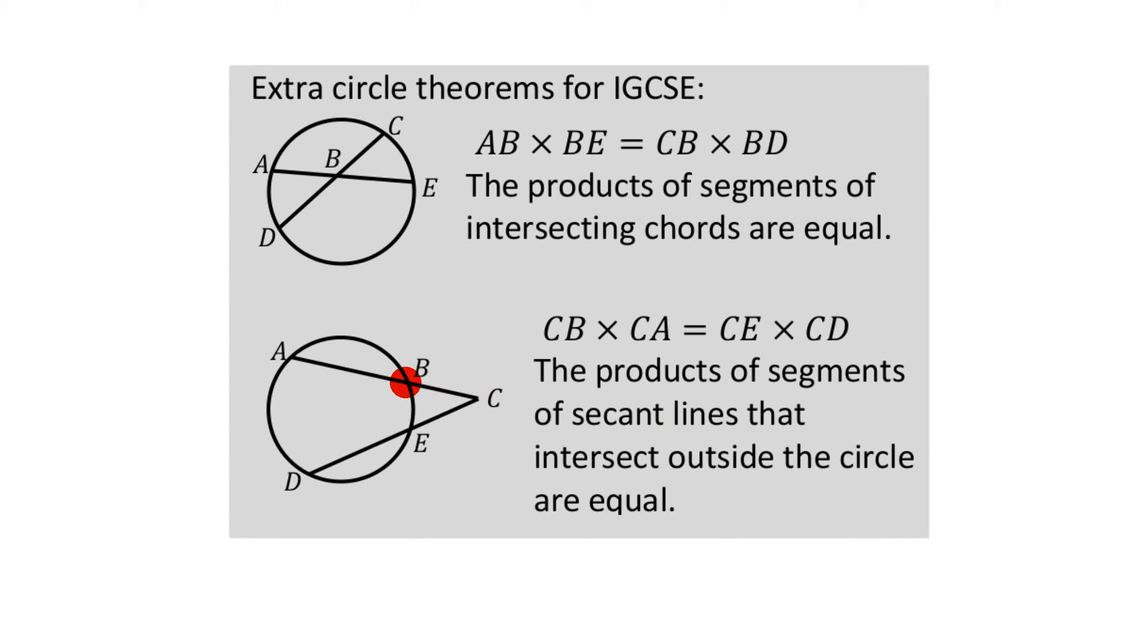Slightly different. It's this bit, this short bit, times the whole thing together. So CB times CA equals CE times CD. So this length times that length is equal to this short length times the whole big length from C to D. And that's the end of the rule.